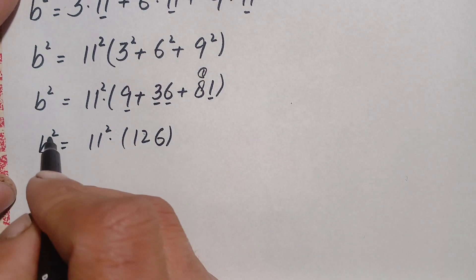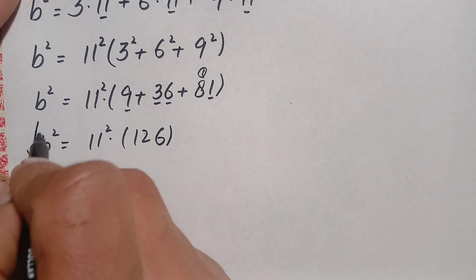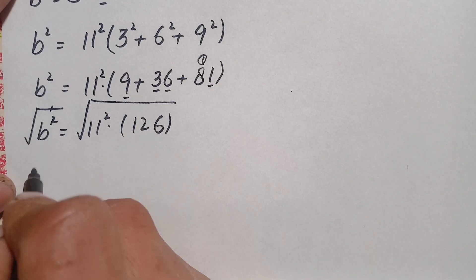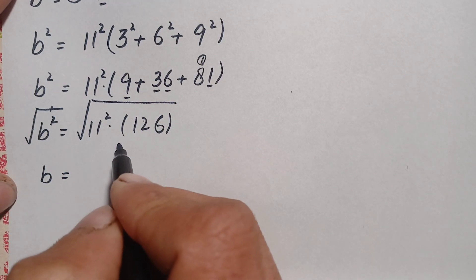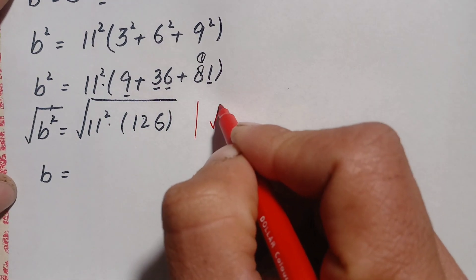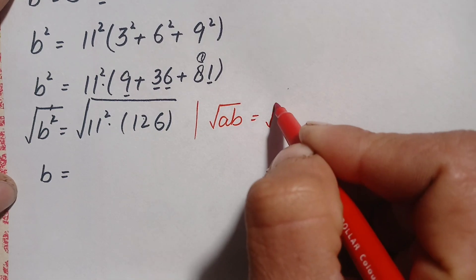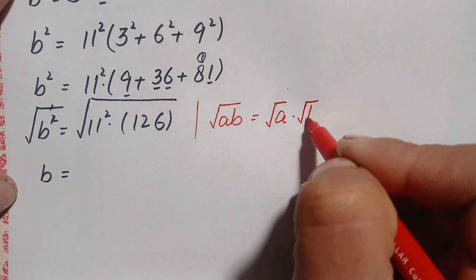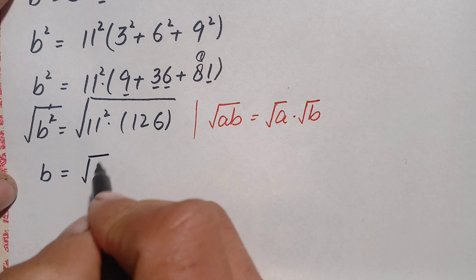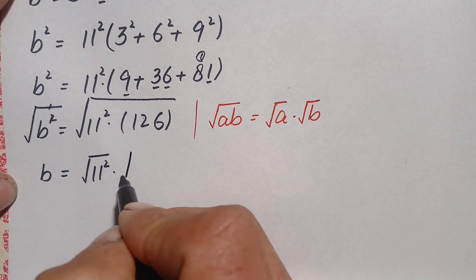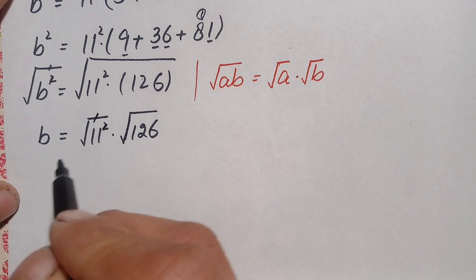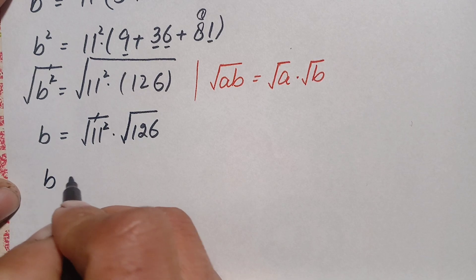Now we take the square root on both sides to eliminate the square from b. On the left side, the square and square root cancel, leaving just b. On the right side, we use the result √(a × b) = √a × √b, so we get b = √(11²) × √126, and √(11²) simplifies to 11. Thus b = 11 × √126.